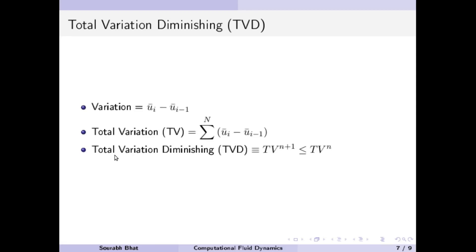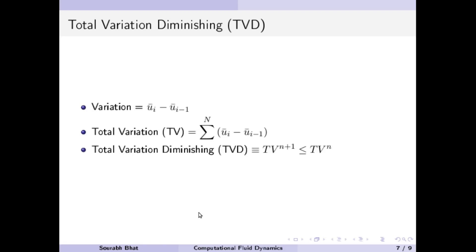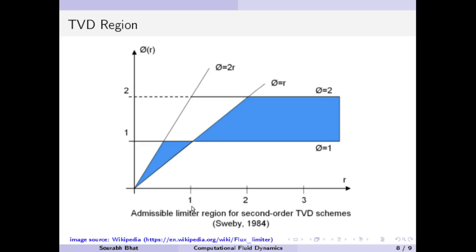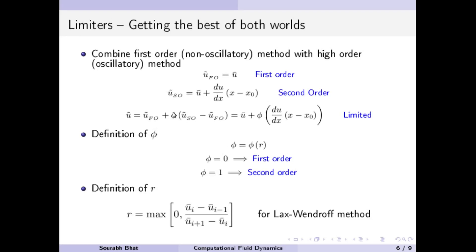When r is negative or zero, there is either a hill or a valley in the solution. Therefore, anything in that region — when r equals 0 — must go to first order. If phi is 0, it goes to first order. Any limiter function lying in this blue region will give a non-oscillatory solution.